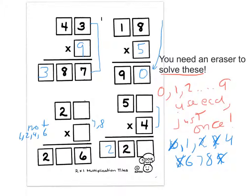Next, we ask ourselves: how can I get a 6 with the numbers remaining? I have a 1, a 4, a 6, a 7, and an 8. We know we have to use 7 or 8. But to get a 6 out of that — 7 times 4, 7 times 2 — we have to be using the 7 and 8 there. So we know the 7 and 8 are there, and we're getting closer.